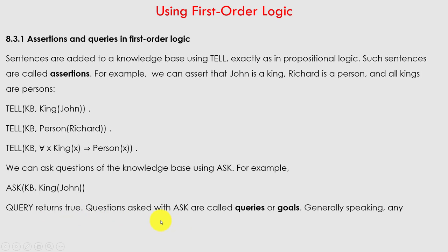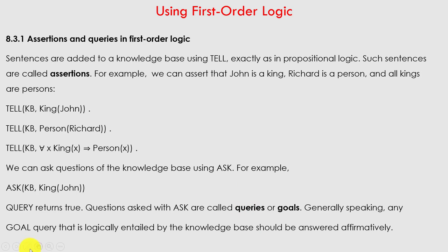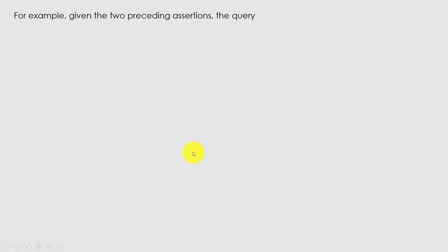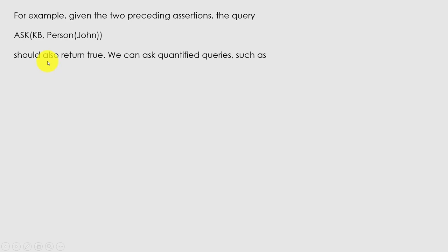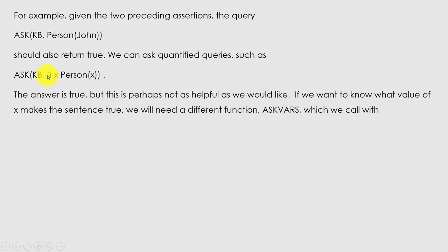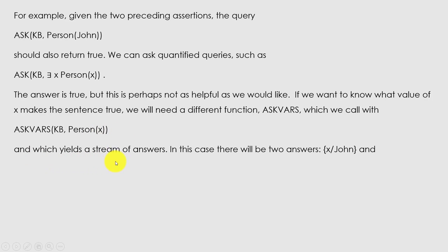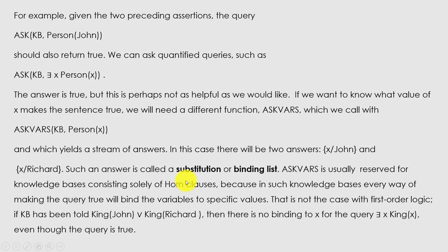Queries are questions asked with Ask and are called queries or goals. Generally speaking, any query logically entailed by the knowledge base should be answered affirmatively. Given the preceding assertions, Ask(KB, Person(John)) should return true. We can ask quantified queries. If we want to know what value of x makes a sentence true, we use AskVars(KB, Person(x)), which returns a stream of answers — in this case two answers: x = John and x = Richard. Such an answer is called a substitution or binding list.